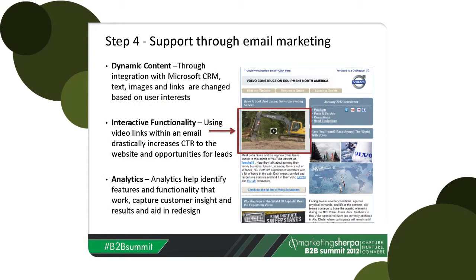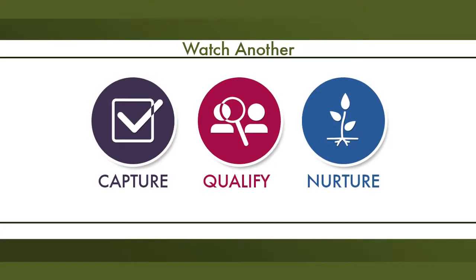Dynamic means I want the right message going to the right individual. If Justin is interested in a paver, how many of you think he'd be interested if I send him an email about an excavator? We have a wide range of products, and we want to make sure that the right product reaches the right individual. So when we send emails, we want the content to change automatically based on who the recipient is and what their interests are. Interactive functionality: videos work. If you include links to videos in your email, you'll have a much higher click-through rate. And analytics — always adjust and review how your emails are working. Don't forget to track the click-through rate on your email links.